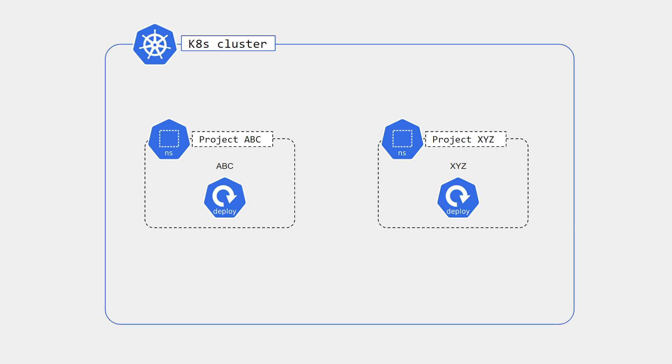These are all four namespaces available in the Kubernetes cluster. Now, why do you need a namespace? Suppose you have hundreds and thousands of applications to deploy — maintaining everything in a single namespace would be very difficult. If multiple teams are working together and there is any change in configuration, it will change everything in that particular namespace.